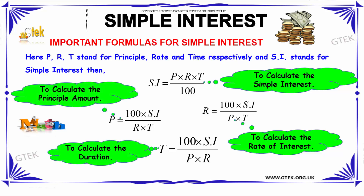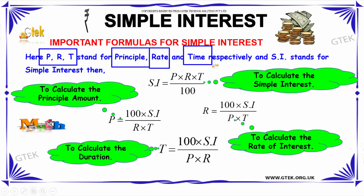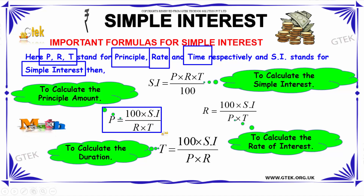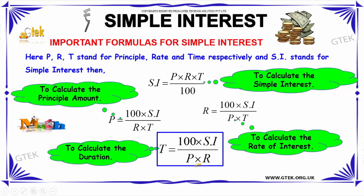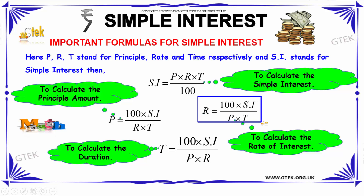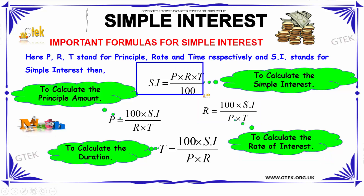The important formulas of simple interest — where P, R, and T stand for principal, rate, and time respectively, and SI stands for simple interest — are: P = 100 × SI / (R × T) to calculate the principal; T = 100 × SI / (P × R) to calculate the duration; R = 100 × SI / (P × T) to calculate the rate of interest; and SI = P × R × T / 100 to calculate the simple interest.